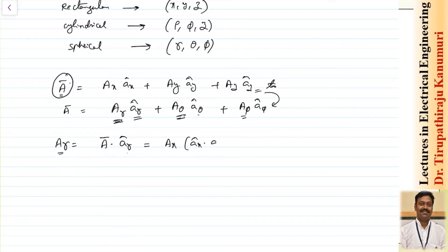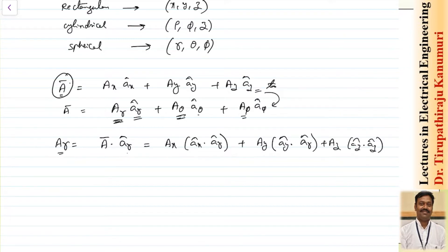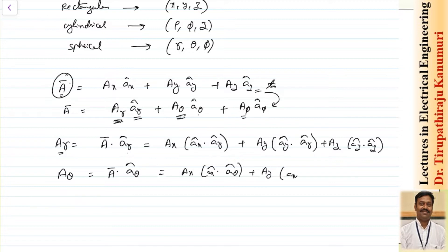So A_R can be computed as: Ax times (ax dot aR) plus Ay times (ay dot aR) plus Az times (az dot aR). Similarly, A_theta equals A dot a_theta, giving Ax(ax·aθ) + Ay(ay·aθ) + Az(az·aθ). And A_phi equals A dot a_phi, computed the same way.